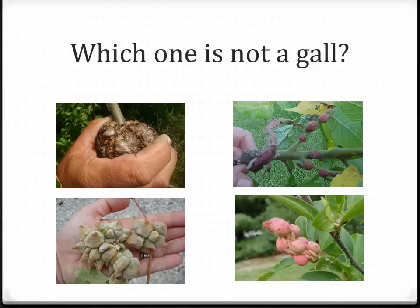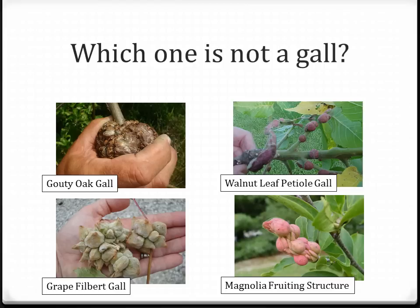Looking at the labels, you can see that in the lower right-hand corner the magnolia picture is actually its fruiting structure. Someone who has not seen a magnolia fruit before might become concerned thinking they have some form of gall. This is actually its fruiting structure and not a gall. The other three pictures are in fact galls caused by insects that have attacked the plant. Some we see irregularly, and among the more uncommon ones are the great filbert gall and the walnut leaf petiole gall. We're seeing the gouty oak gall more commonly, particularly in some of our native trees.